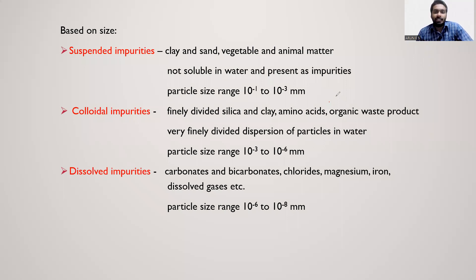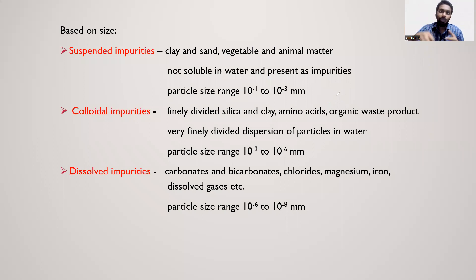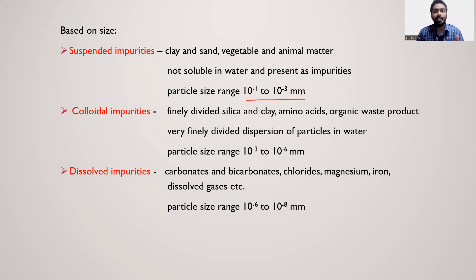Suspended impurities include clay and sand. If we have a glass of water with these particles, they are impurities. The particle size range for suspended impurities is 10⁻¹ to 10⁻³ mm — very minute particles. Examples include clay, sand, vegetable and animal matter.